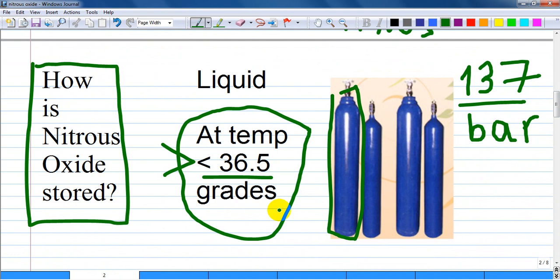How is nitrous oxide stored? In a cylinder called French blue, usually a full cylinder with nitrous oxide in liquid phase has around 137 bars. It is stored at temperatures less than 36.5 degrees Celsius because at this temperature it remains in liquid phase, but at higher temperatures it converts to gas phase.